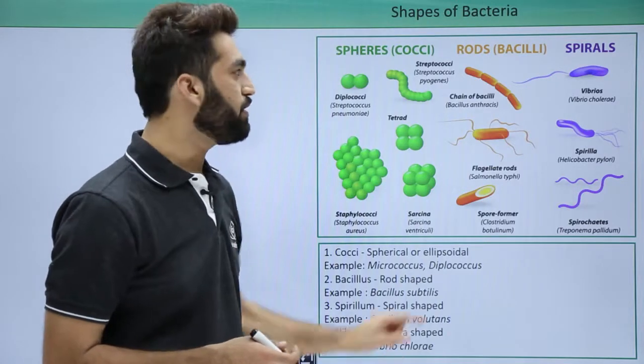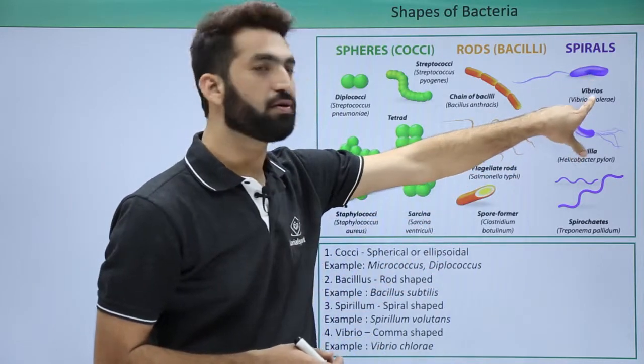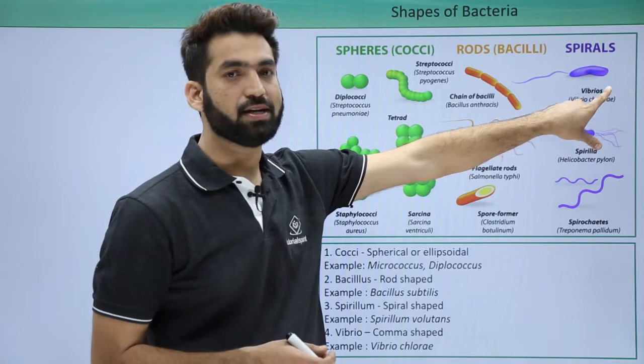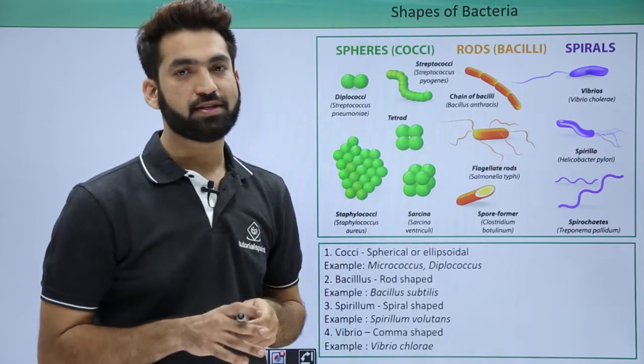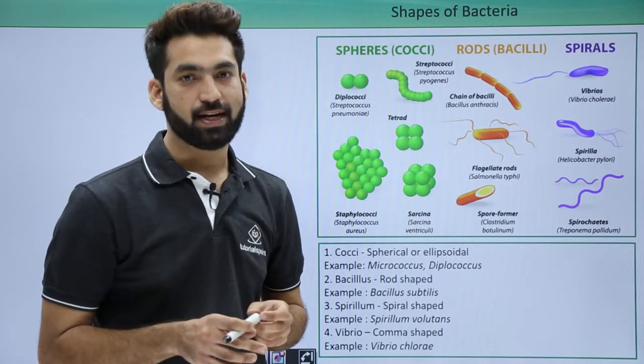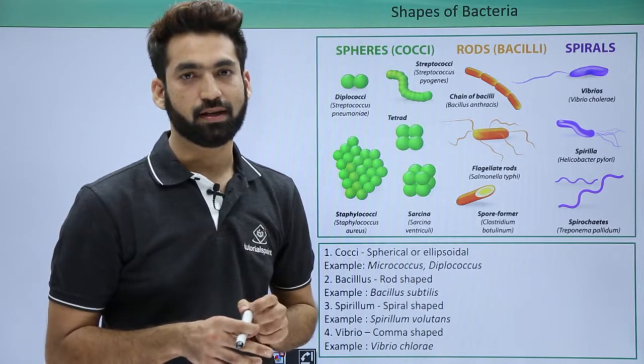The fourth shape is called vibrio, which is comma-shaped. Vibrio cholerae, the cholera-causing bacteria, is an example. In the next session, I'll detail gram staining in bacteria.